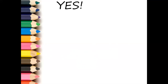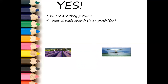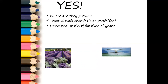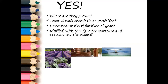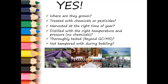Cutting corners is not what you want. They need to be as pure as nature intended. You have to look at where they're grown — with the right climate and soil — and they cannot be treated with chemicals or pesticides. They have to be harvested at the right time of year. They must be distilled at the right temperature and pressure with no chemicals added, and thoroughly tested, including third-party testing. Be careful of oils that have fillers or synthetics mixed in.